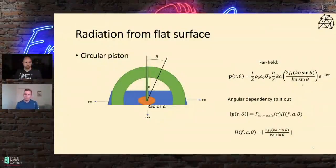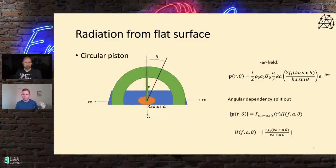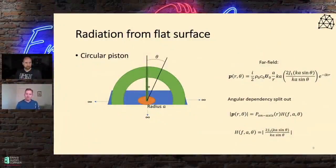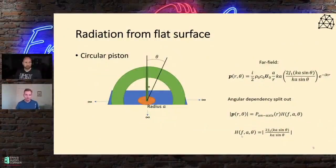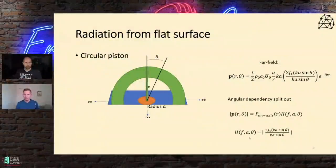In the far-field expression, the only place where the angle relative to on-axis appears is in this fraction, so we can factor out the on-axis pressure as a magnitude reference and express everything off-axis relative to that. The angle dependency involves a Bessel function J1. There are three variables to consider: frequency, the radius or diameter of the piston, and the angle.